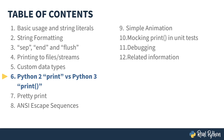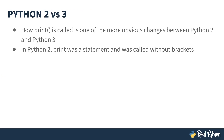In the previous lesson, I spoke about custom data types. In this one, I'm going to drill down a little bit on the differences between print in Python 2 and Python 3. Print is one of the more obvious changes between Python 2 and 3. In Python 2, print was a statement.